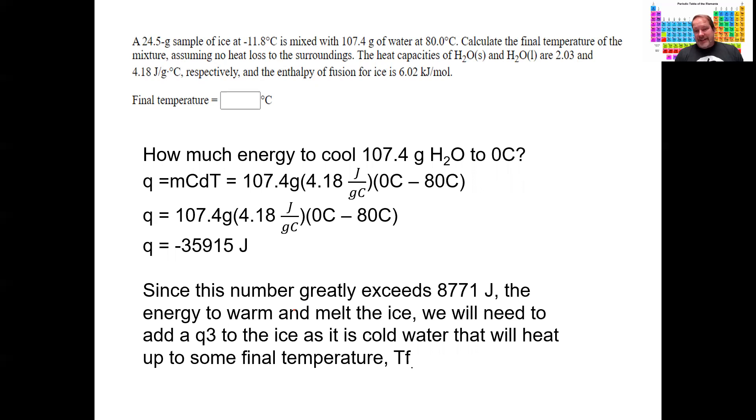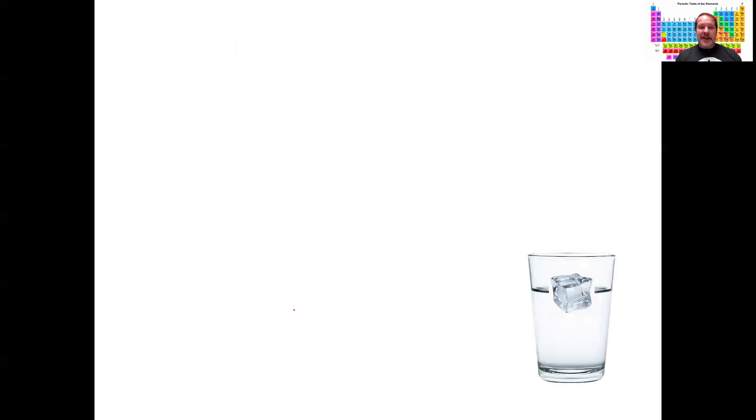But I only need about 9,000 joules to warm up the ice, because the heat's going to flow from the water into the ice. What this means is that there's plenty of energy in that 107.4 grams of water. So I treat that as a different system that can flow out into the ice. So I need to add a third q to the ice problem, to the ice side. Because remember, all the energy is flowing from water into ice. That's why I put a negative in front of it.